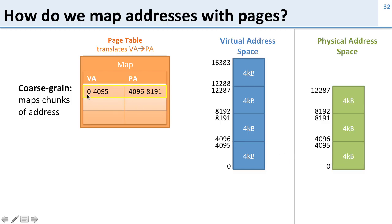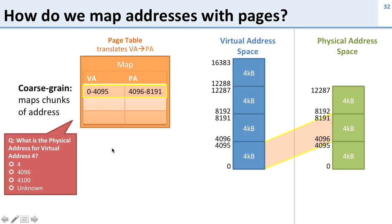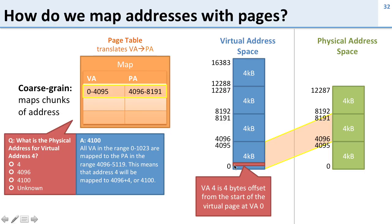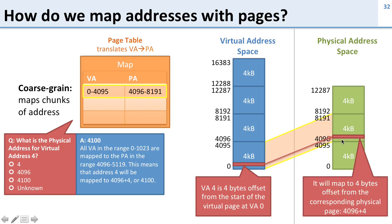Now let's see how this translation works. The translation tells us that virtual addresses 0 to 4095 — addresses in this page — are translated to physical addresses 4096 to 8191. So this virtual page is translated to that physical page. Instead of pointing to individual words, we're saying this whole page maps to this whole page. But here's a question: what's the physical address for virtual address 4? The map doesn't have an entry for 4 specifically, just for the range. The answer is 4,100. Address 4 is offset by 4 bytes from the start of the virtual page; since that page maps to physical address 4096, the word is 4 bytes off from 4096, giving physical address 4,100.